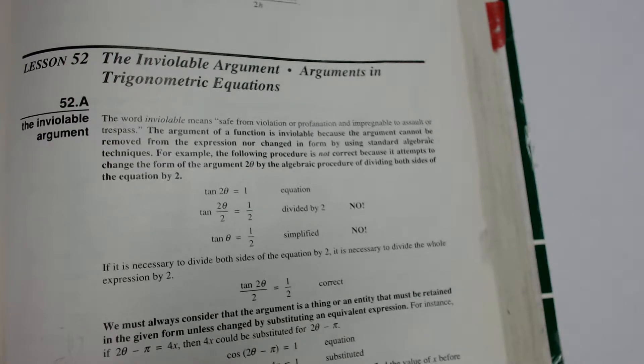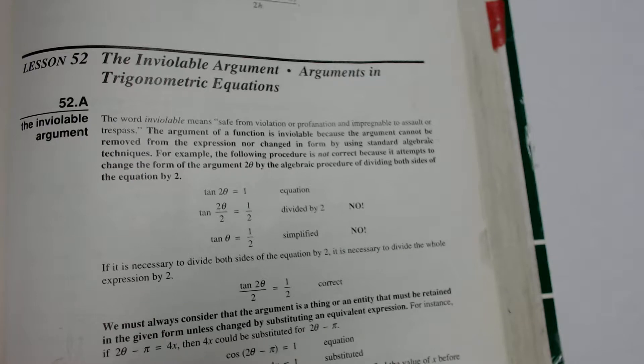Advanced Math Lesson 52: The Inviolable Argument and Arguments in Trigonometric Equations. The Inviolable Argument is just a couple different rules about trigonometric identities that you can't break when solving them as equations.